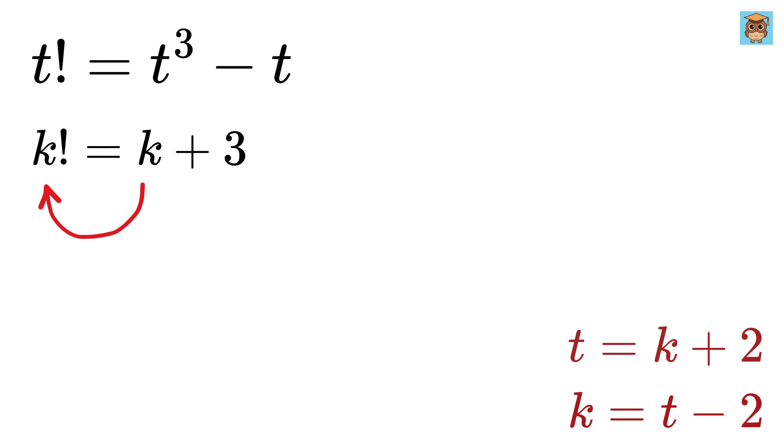Now, take this k on the right-hand side to get k factorial minus k equals 3, and then write this k factorial as k times k minus 1 factorial. So take k as common from here to get k times k minus 1 factorial minus 1, and this equals 3.